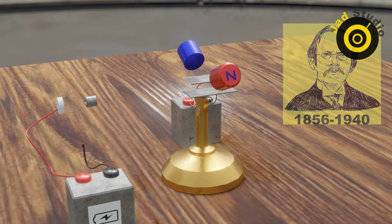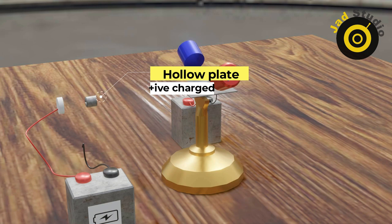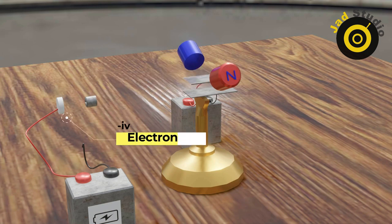In this experiment he used a setup which is showing to you on the screen. A hollow positively charged metal along with the electron gun, you can see wires are attached. Now the cathode ray is hidden for better visualization.